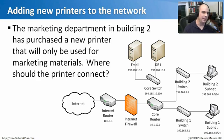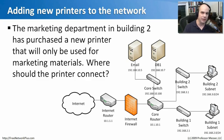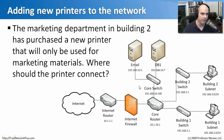Let's take the same network and ask another question. The marketing department is in building two and they bought a new printer for color proofs — nobody else in any other building or department will use it. Where would you connect this printer? The big clue is that marketing is in building two. So you'd plug it into the switch in building two where all those users are, giving marketing local access. There's no reason to use a critical core switch port for that printer, especially since the core is in a different building.